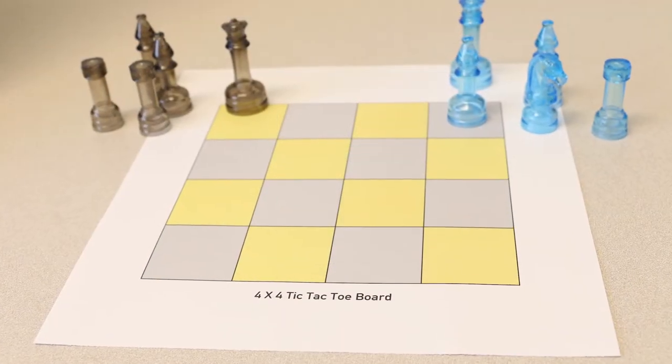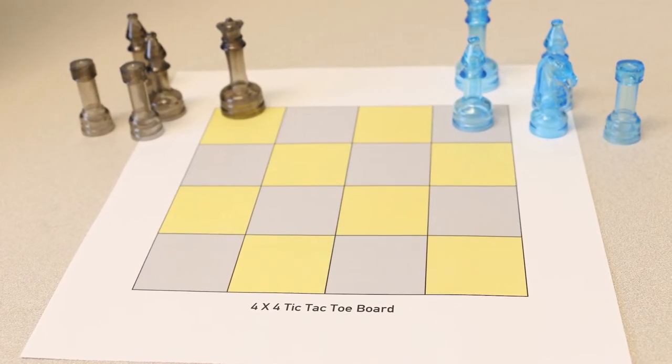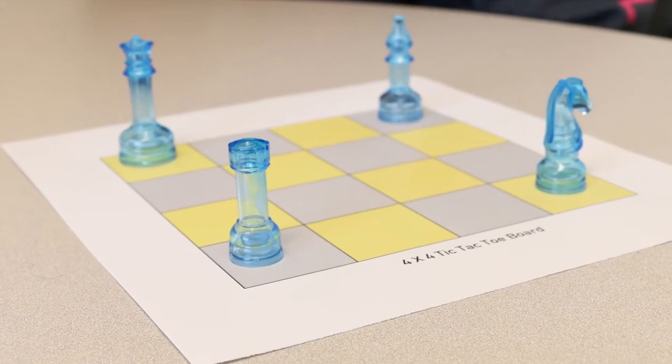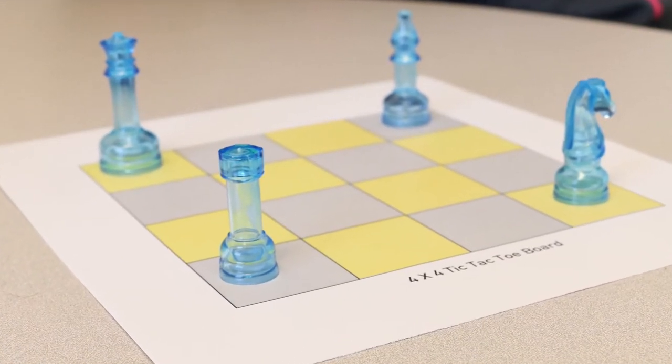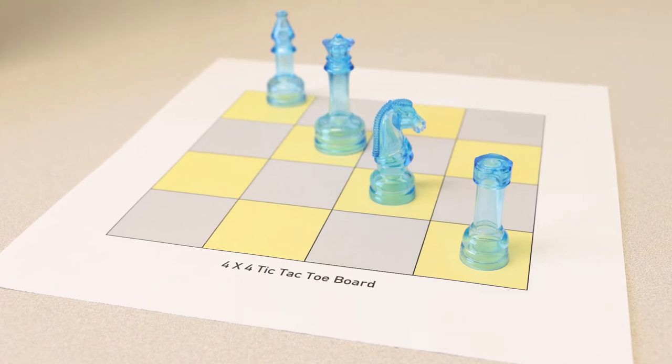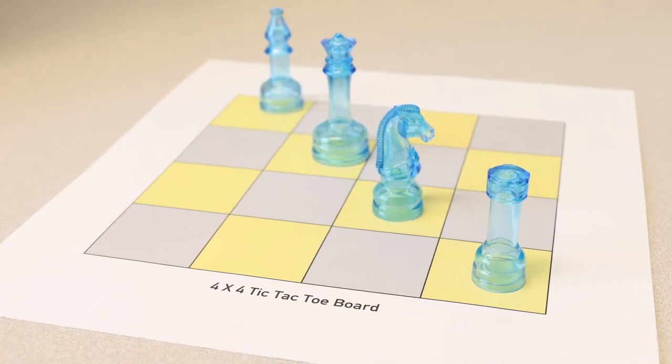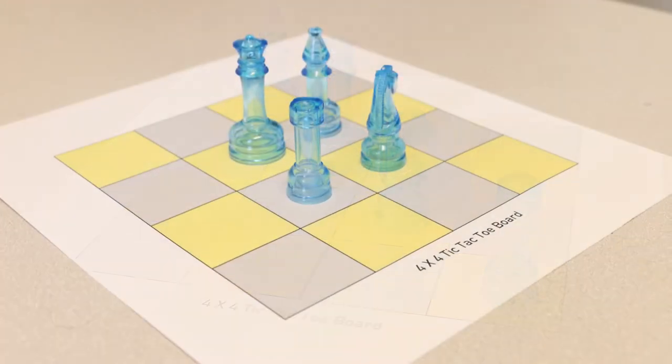The second version is a 4x4 game. Each player now has five game pieces to play. Follow the same rules as in the first version except now you must get four in a row or four corners of a 2x2 or 4x4 square to win.